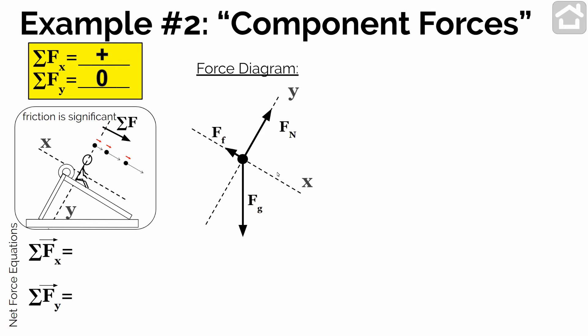We just said that the sum of the forces in the x direction has to be positive, yet we just have one force in the x direction. And we said the sum of the forces in our new y direction has to be zero, but we look at our force diagram and we just have one thing in the y direction. This is going to be similar to how we thought about component forces or angled forces. The normal force is in the y direction, the frictional force is in the x direction, and the force of gravity is not only in the x or only in the y direction — it's pulling both in the x direction and in the y direction at the same time.